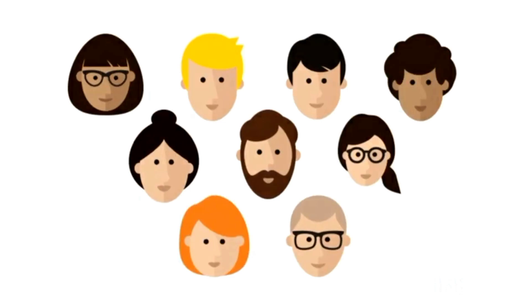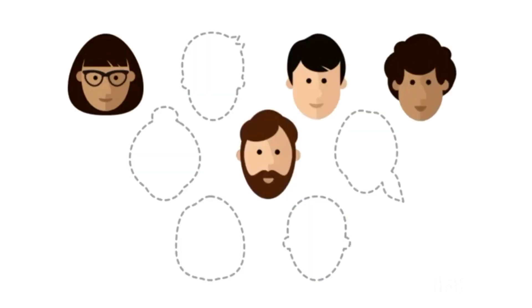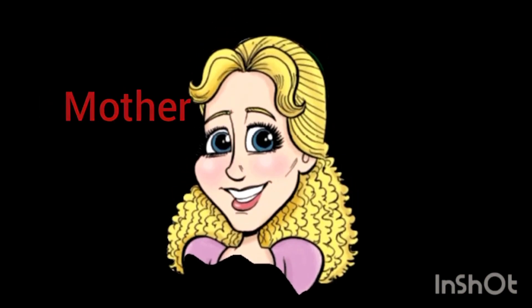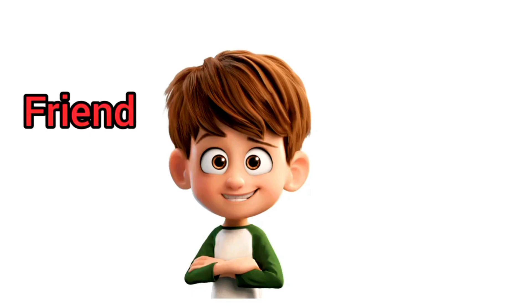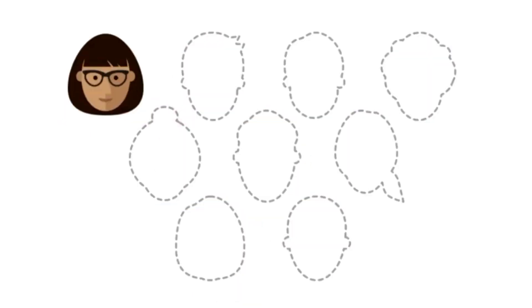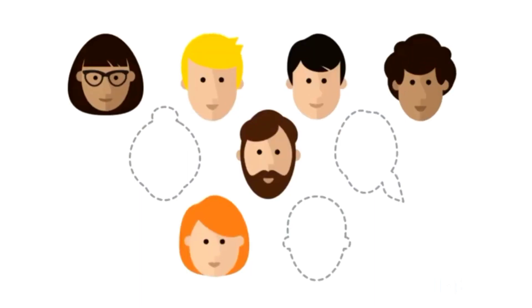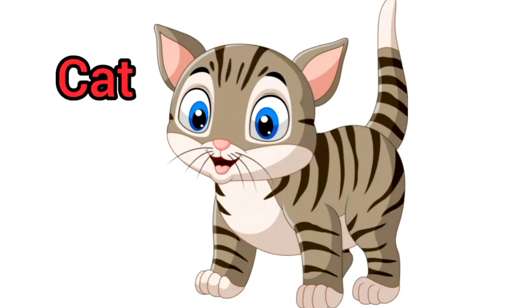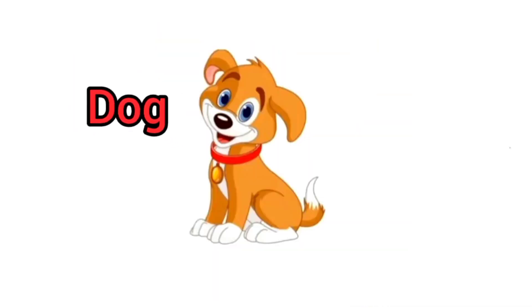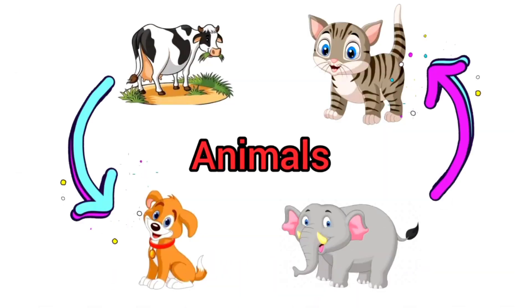There are many people around us whom we identify with certain names. Mother, father, teacher, friend are the names of people — so a noun can be a name given to a person. Name a few animals you have seen: cow, cat, dog, elephant are names of animals, so a noun can be a name given to an animal.